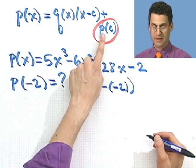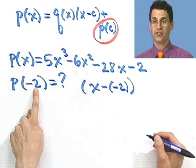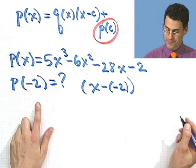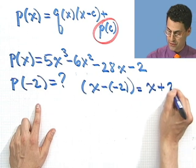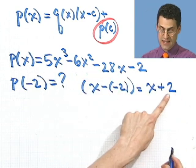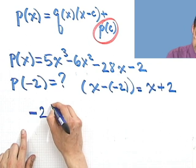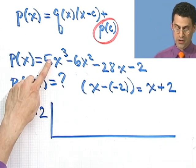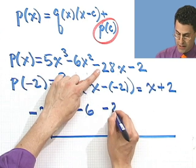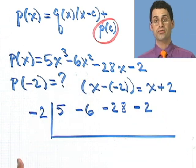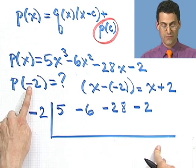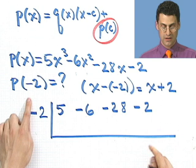What I'm going to do is notice that this will be the answer to the following question: what is the remainder when this polynomial is divided by x minus negative 2, which is just x plus 2? So what's the remainder? The remainder will exactly be p evaluated at negative 2. So all I have to do now is compute the remainder using synthetic division. This thing is just x plus 2, so if I'm going to divide this into the polynomial, I switch the sign — so that becomes negative 2. I write down the coefficients: 5, negative 6, negative 28, and negative 2.